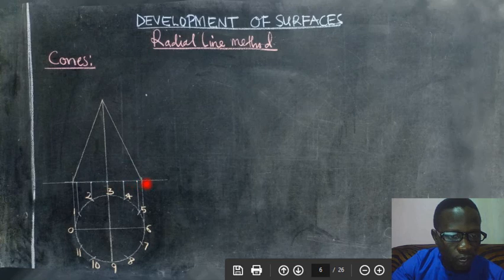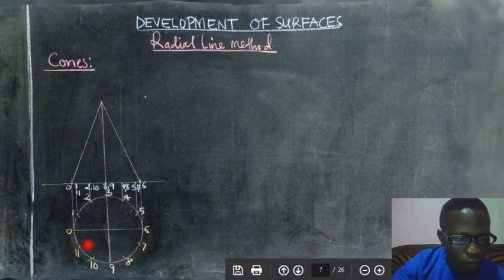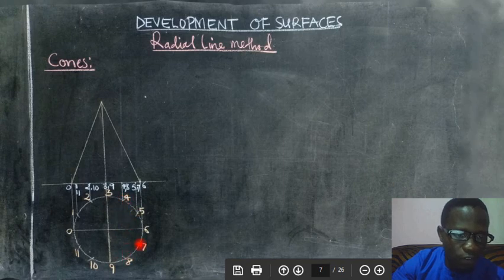We have those points on the base of the cone and we are going to label them as we see them from the plan. So 0, we have 0 there, 1 and 11 which is 1 and 11 then the same line, 2 and 10, 3 and 9, 4 and 8, 5, 7 and then 6. As you can see them included on the base of the cone.